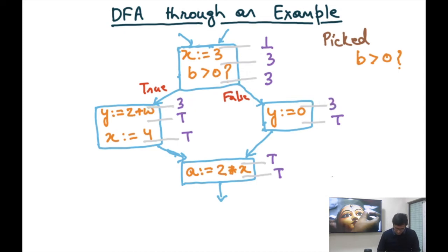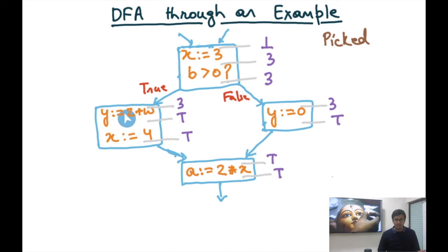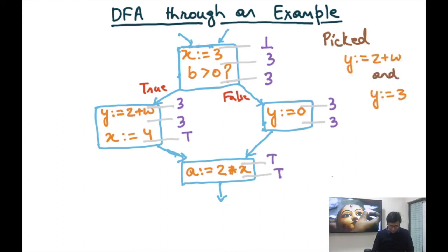In the next step, we pick y:=z+w and y:=0, updating those program points from top to 3, because the statements do not touch x. So we change top to 3 in both cases. In the first basic block, all statements and program points now follow the rules.